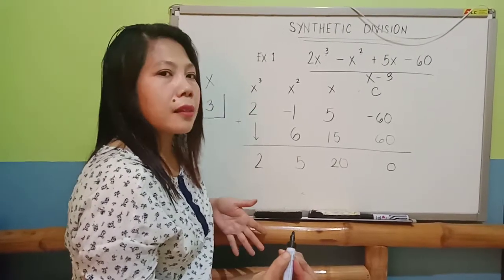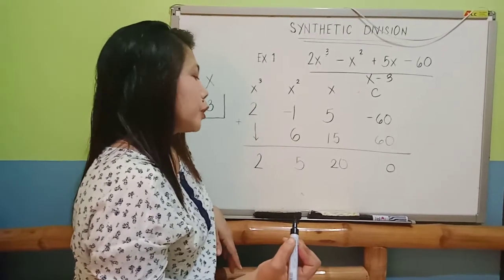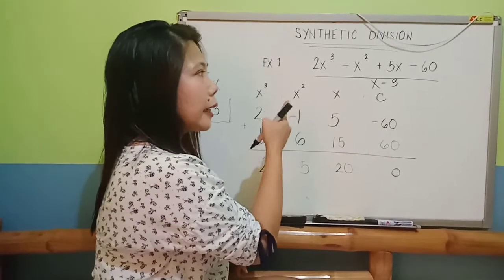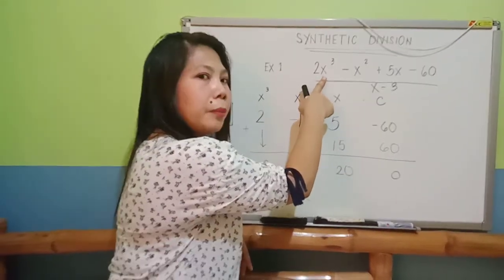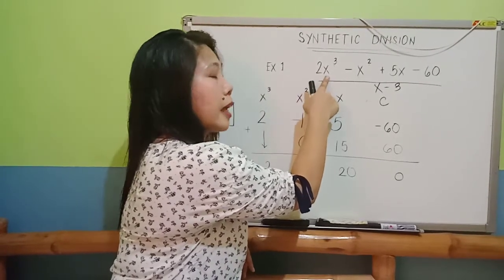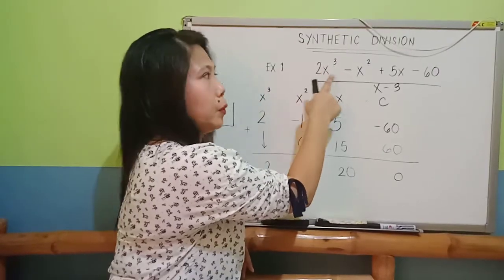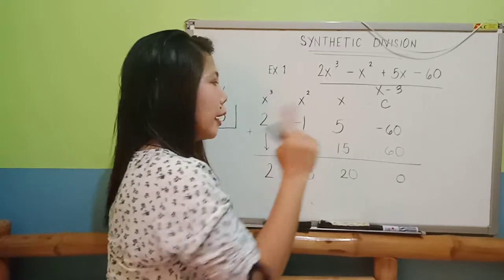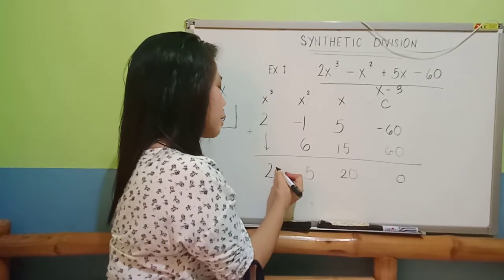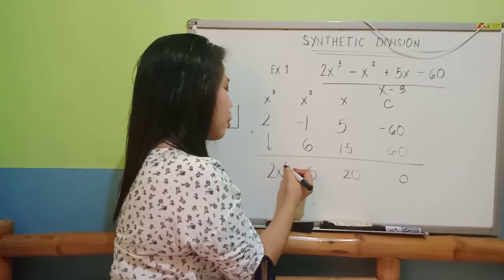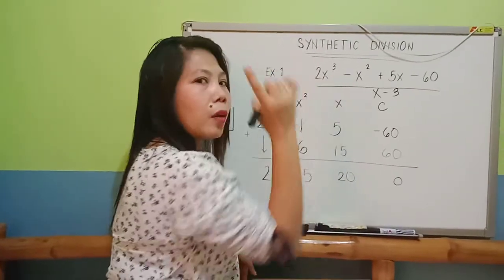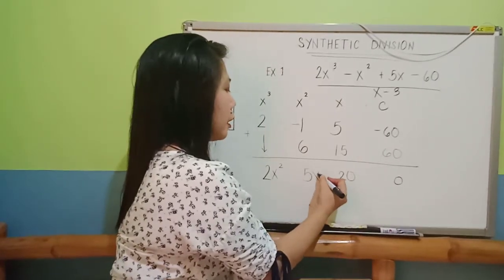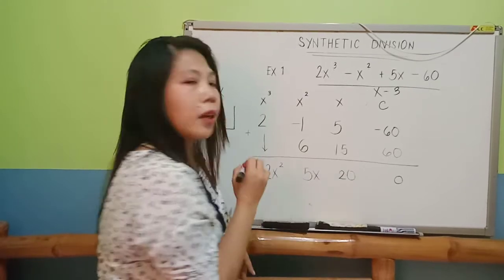What are you going to do next? You're going to place your variables now. You take a look again on your original polynomial on your numerator. Since this is x cubed, this is the highest exponent, then, you just decrement it by 1. x cubed, it will become the highest exponent here will become x squared. Again, you have to decrement it by 1. So, x squared and then followed by x and then this will be your constant.